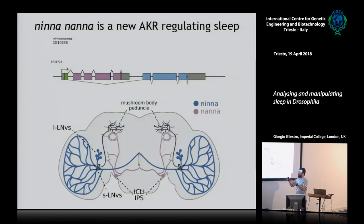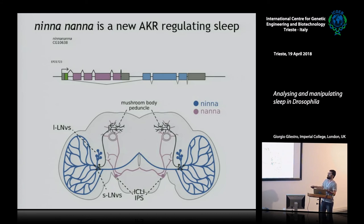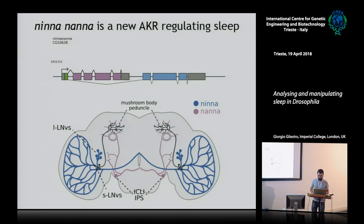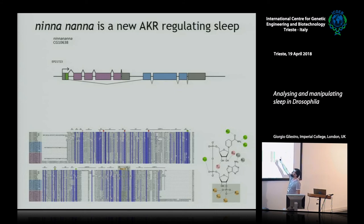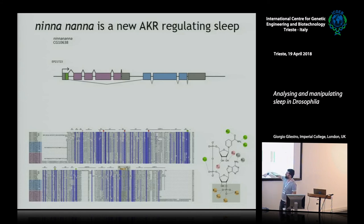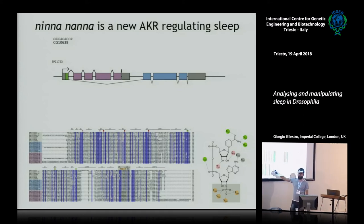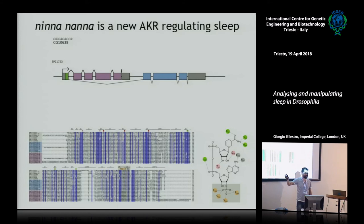The overall picture so far is: you have the ninna component of the gene expressed in circadian neurons, and the nana component expressed in homeostatic neurons, and they merge together to regulate sleep. Now there's one thing I haven't told you — which might well be the most interesting thing — and this relates to the structure of these proteins. We looked at the ninna-nana gene across several sequenced Drosophila species, and found that they share all the critical AKR residues — with one exception: a pocket indicated in orange.